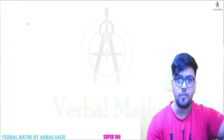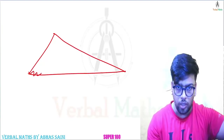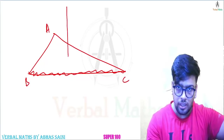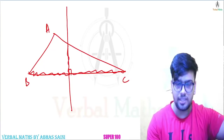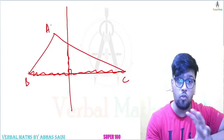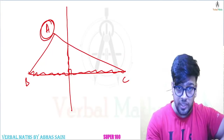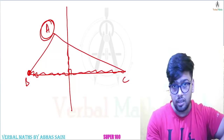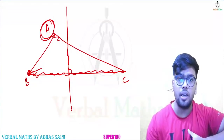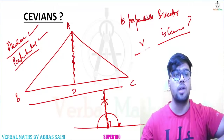Let me give you one example. Suppose this is our triangle and I am drawing the perpendicular bisector on the base BC. The perpendicular bisector looks like this. But the condition for a Cevian is that it must start from some vertex — like it must start from A and then be drawn to BC, or from B to AC, or from C to AB. So a perpendicular bisector is not a Cevian. I am telling you this because Stewart's Theorem works with Cevians.